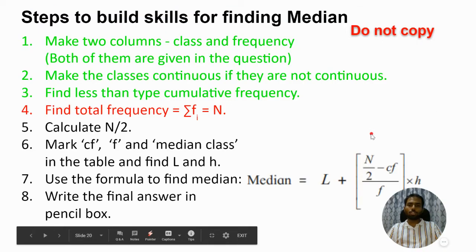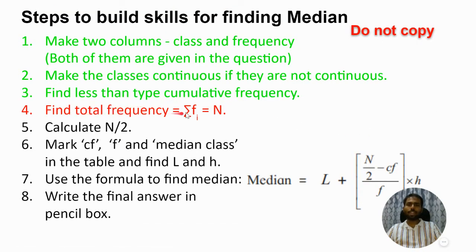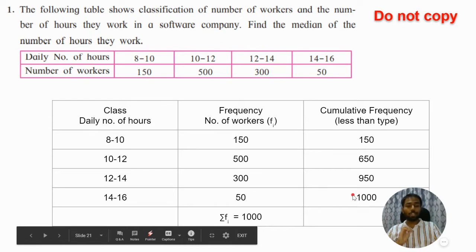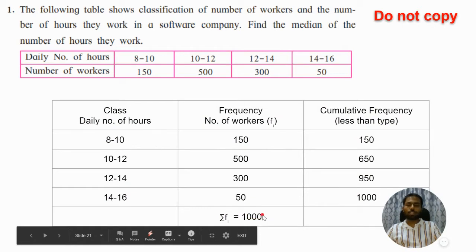We are done with step three. Step four: find summation of frequency fi, which we call n. Summation of fi will always equal the last number in the cumulative frequency column — you can cross-check by adding all frequencies. If they don't match, you've made a calculation mistake. So summation fi equals n, and step four is done.